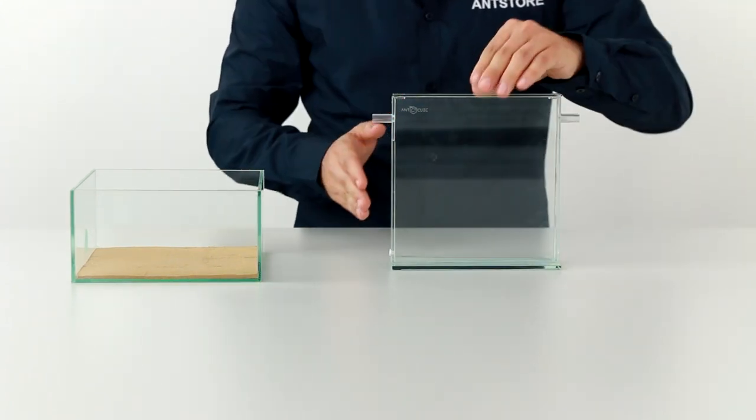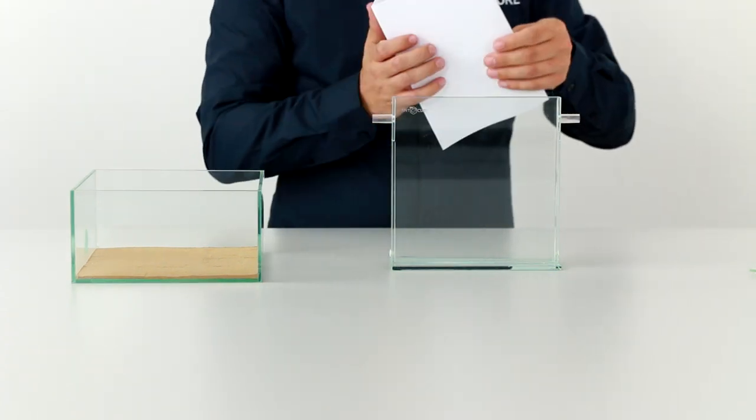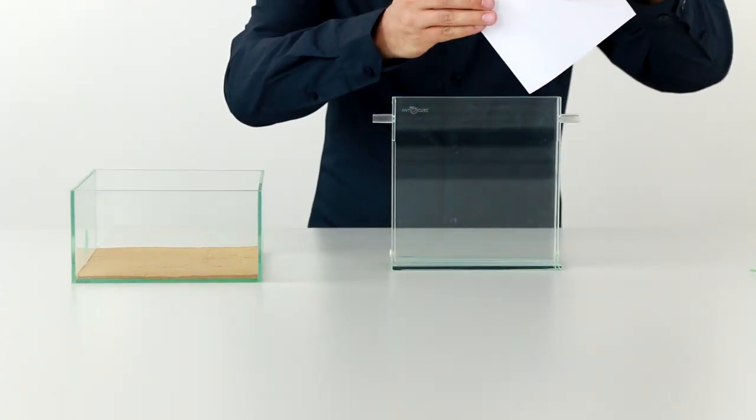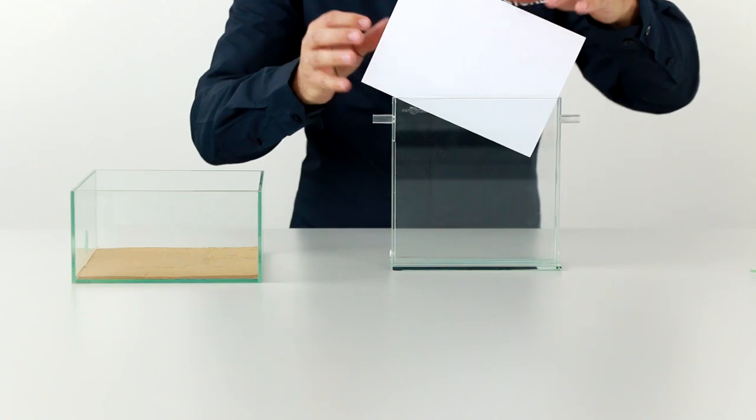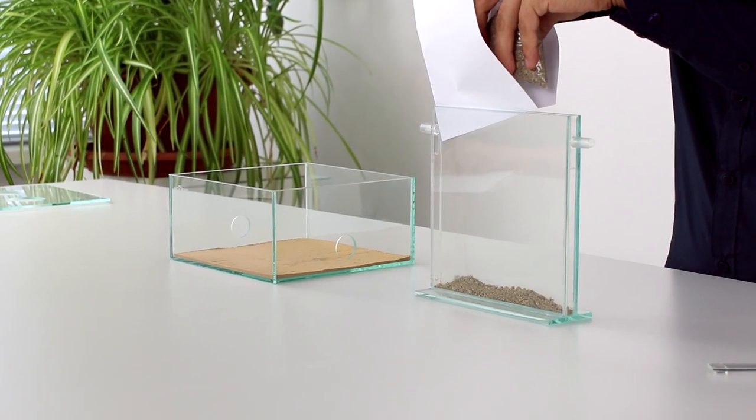Now we will fill the farm, and to make it easier we use a sheet of paper. First comes a layer of granules about 2-3 cm high. This actually only serves for ventilation and at the same time absorbs the excess moisture.